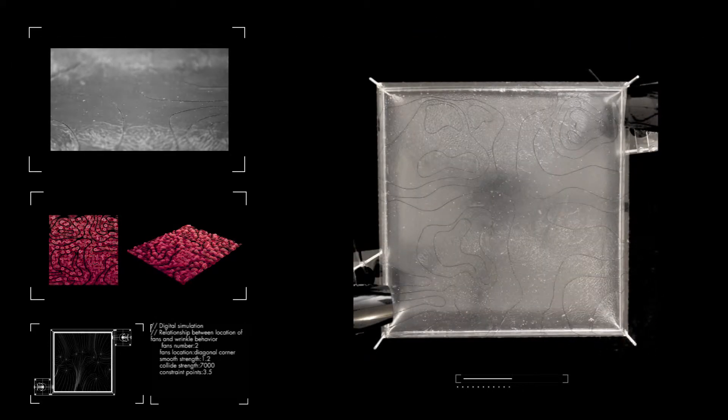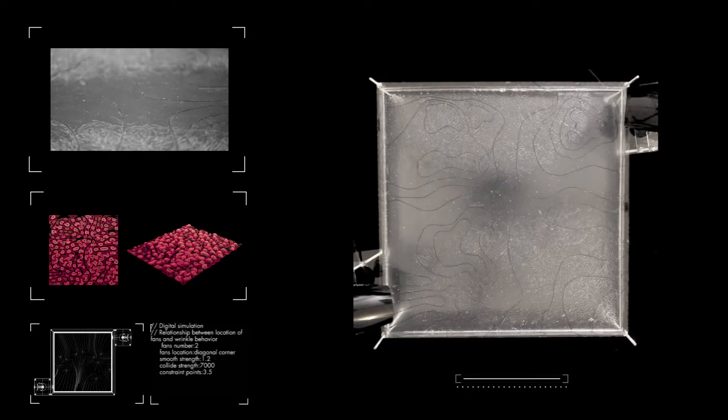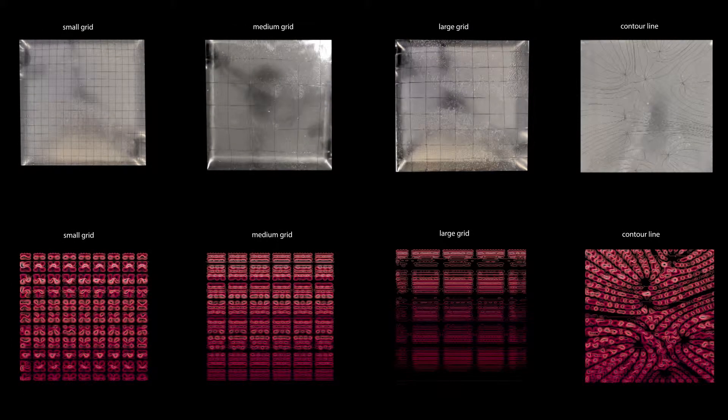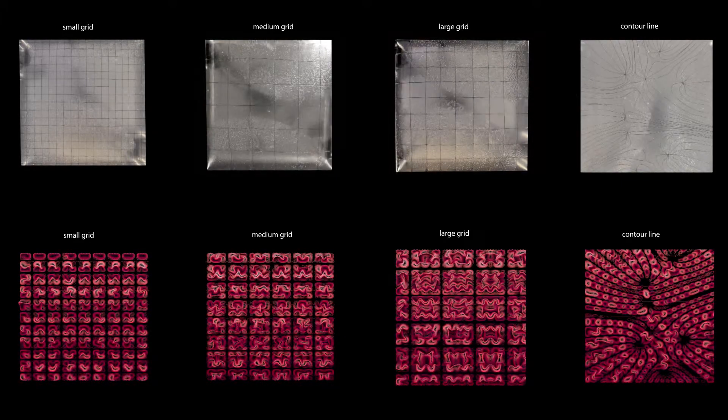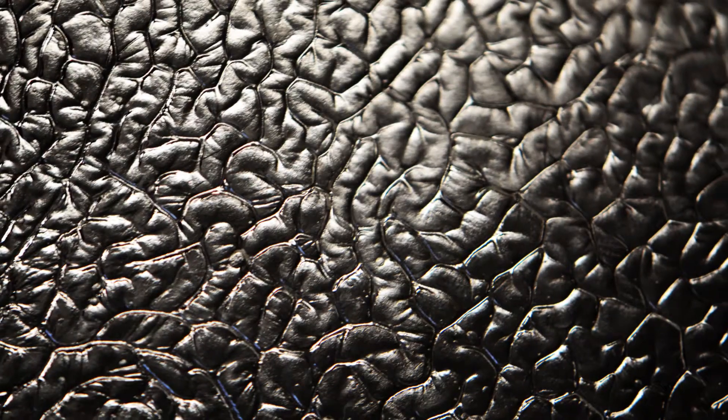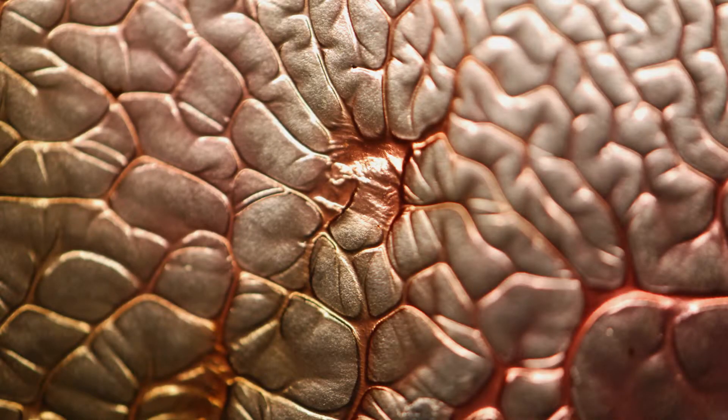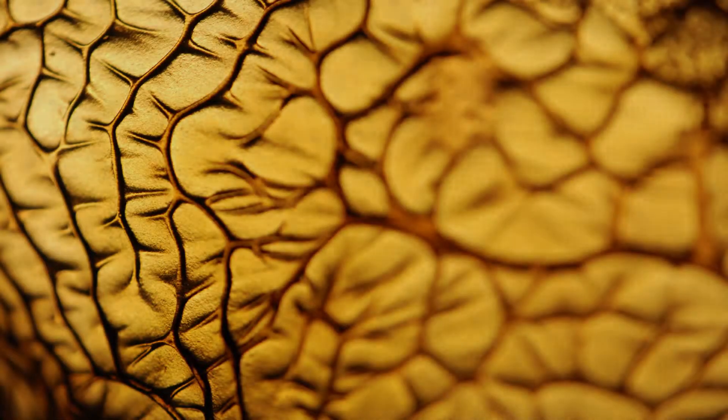Digital simulation can elaborate even further emerging characteristics. Wrinkles would grow along the air flow and control lines, and are affected by these external factors. Wrinkle becomes more complex and variable which could generate urban protocols.